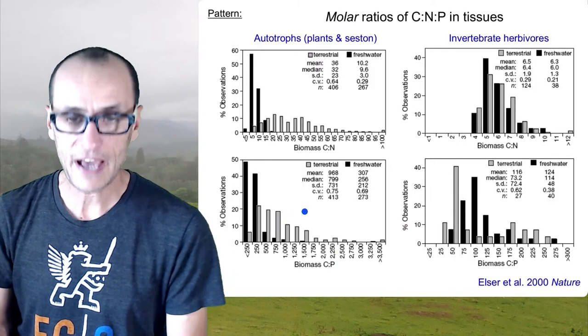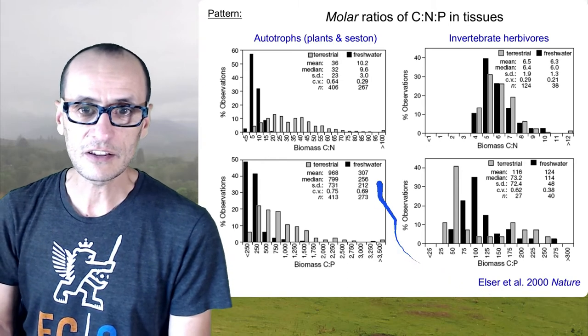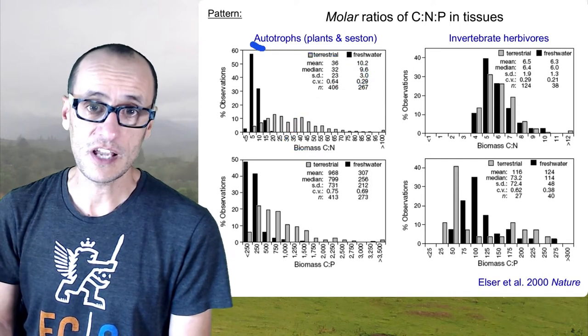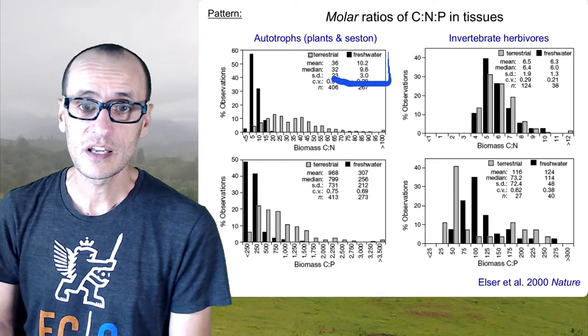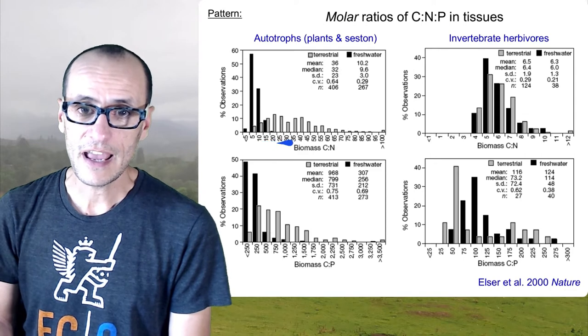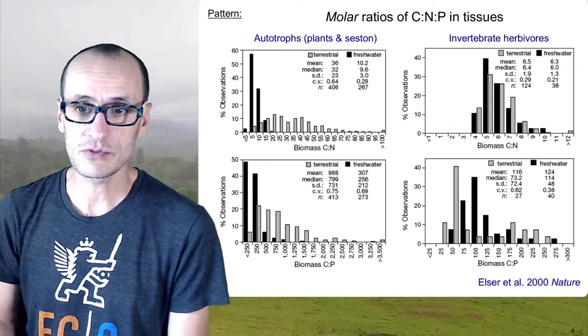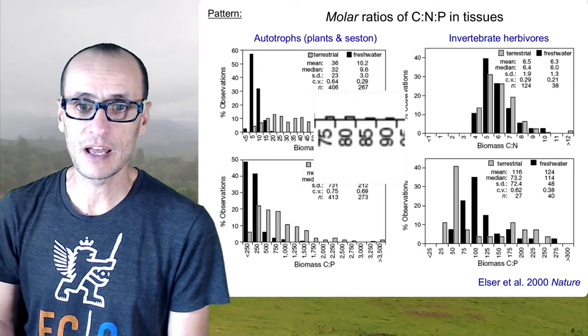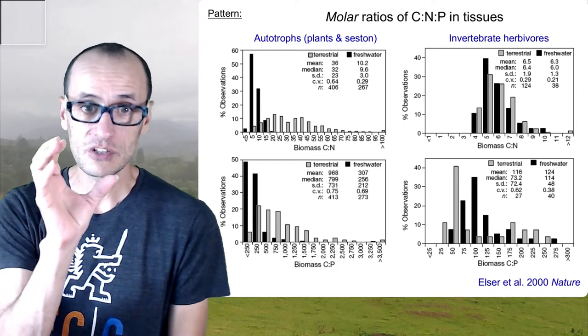So here is a pattern from a synthesis done by Jim Elser, who's one of the people who really dove deep into this particular field, that looked at the carbon to nitrogen ratio of plants, I should say autotrophs, plants and algae, other things, plankton, phytoplankton growing in aquatic systems, in terrestrial systems versus freshwater systems. And what's interesting here is that as these numbers get bigger, that means there's more carbon relative to nitrogen in the tissues of those organisms. So here is the numbers get bigger and bigger. And again, bigger number means the denominator is small in the carbon to nitrogen ratio, which means there's less nitrogen to more carbon.